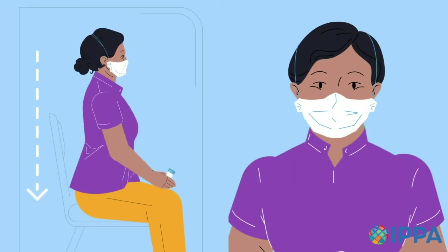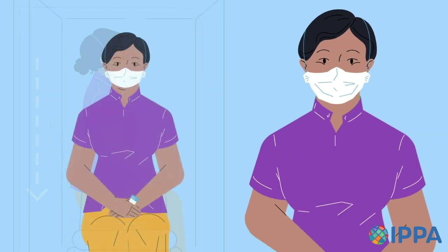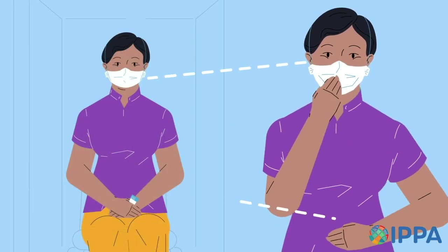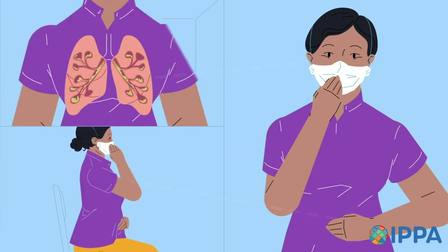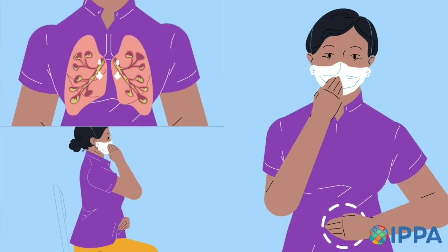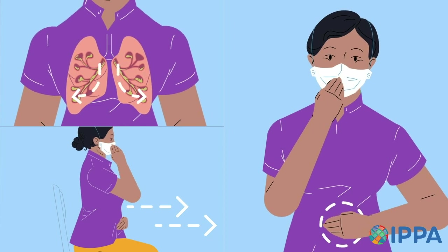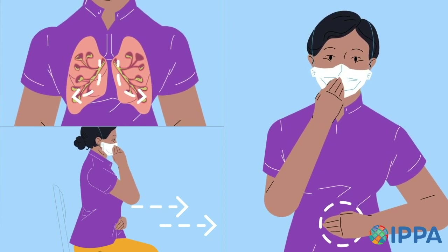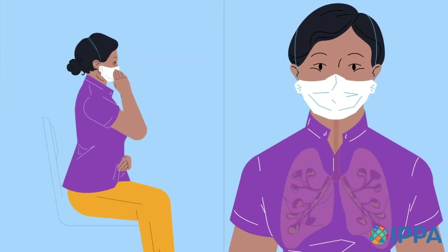Sit upright with your back straight and shoulders relaxed. One hand should be over your mouth using the mask or tissue provided. You can place the other hand over your stomach. Take a few deep breaths while pressing your hand lightly on your stomach. When it's time to cough, you should be inhaling so deeply that you feel it in your stomach area.